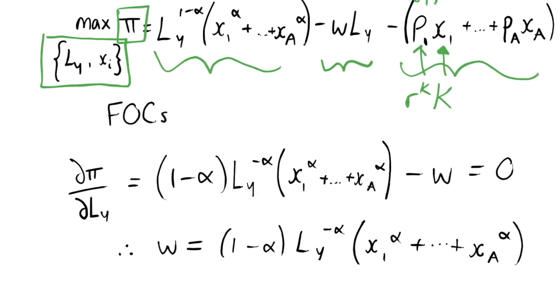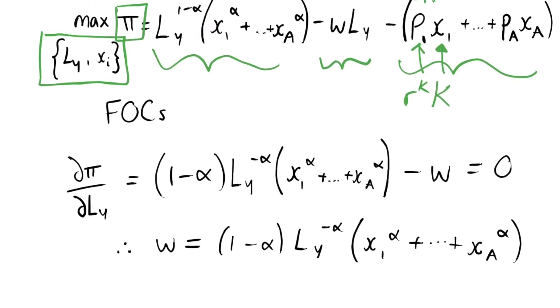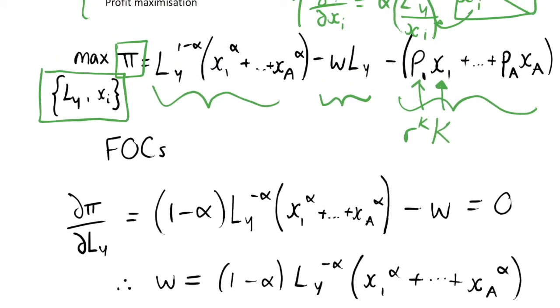So then what we do is we'll take our first order conditions. Notice that we have an awful lot of first order conditions here. We're not just maximizing with respect to L, or labor, and X, we're maximizing with respect to labor and X_1, X_2, X_3, and so on, all the way up to X_A.